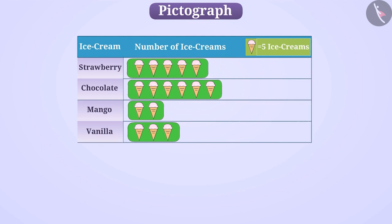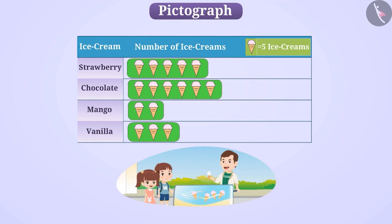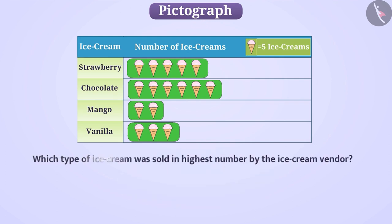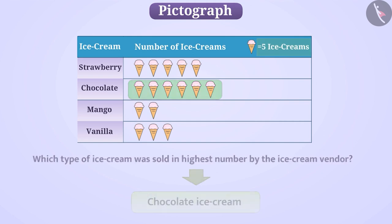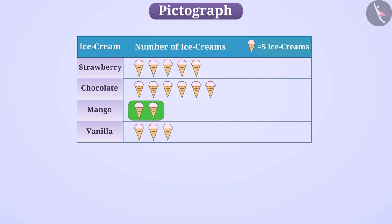Using the pictograph, we can obtain a lot of information. In the given pictograph, we can find the number of ice creams of each type sold by the ice cream vendor. We can also compare them without knowing their numeric value. Maximum images are drawn in the row of chocolate ice cream, so the ice cream vendor sold chocolate ice cream the most. Least number of images are drawn in the row of mango ice cream, so the ice cream vendor sold mango ice cream the least.